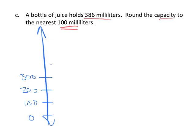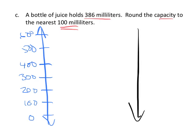100, 200, 300, 400, 500, 600. And the idea would be, okay, between what two hundreds is 386 going to live between? We can see that it's going to live somewhere between 300 and 400.